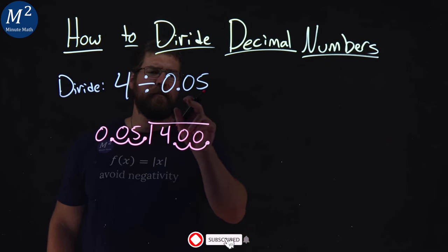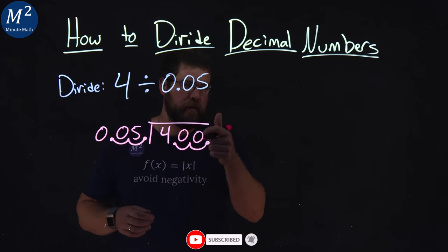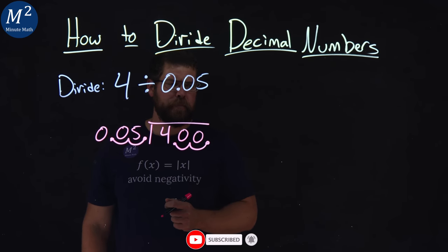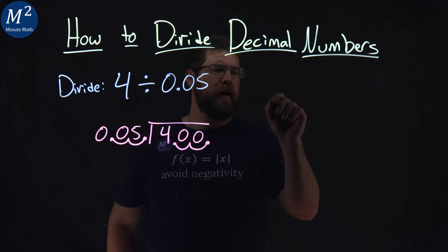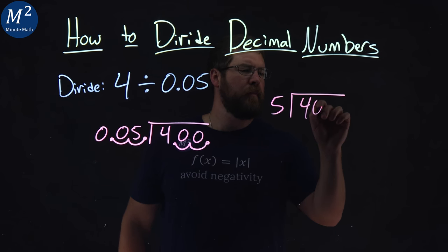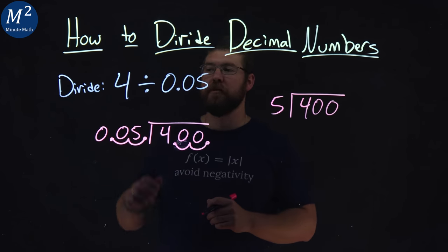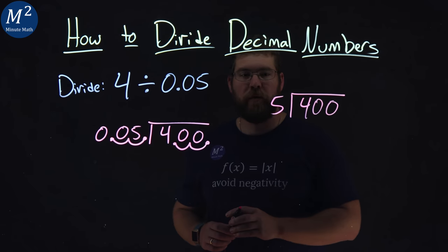And what's nice is a positive divided by positive is also a positive number, so we got that going for us. So if I rewrite this problem, I have 5 goes into 400. This is an equivalent problem to 4 divided by 0.05.